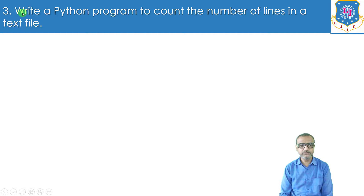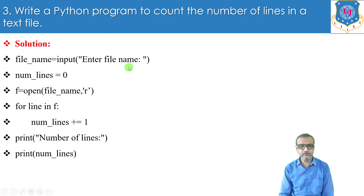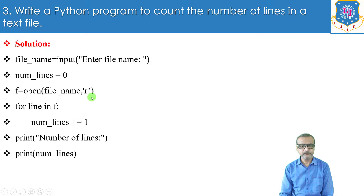Now we will see program number three: write a Python program to count the number of lines in a text file. First of all the user will enter the file name — that is file_name equals input('Enter file name:'). That file name will be stored in the variable file_name. We initialize the variable num_lines with 0. Then we open file_name in read mode: f equals to open(file_name, 'r').